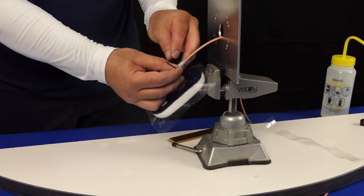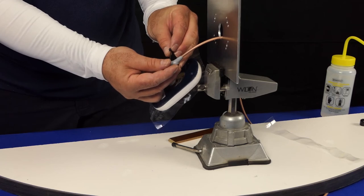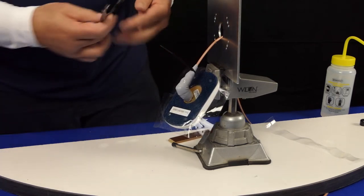Apply the provided zip tie immediately below the end of the wrap on the cable. Cut the excess zip tie flush.